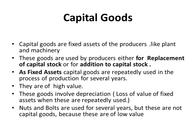Capital goods are fixed assets of the producers, like plant and machinery. These goods are used by producers either for replacement of capital stock or for addition to capital stock. As fixed assets, capital goods are repeatedly used in the process of production for several years. They are of high value.